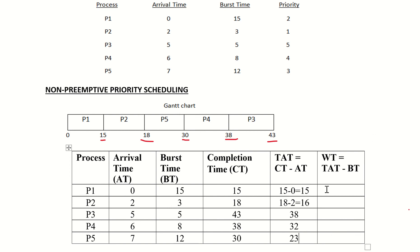Now waiting time equals turnaround time minus burst time. P1 turnaround time is 15, burst time is 15, so 15 minus 15 equals 0. P2 turnaround time is 16, burst time is 3, so 16 minus 3 equals 13. P3 turnaround time is 38, burst time is 5, so 38 minus 5 equals 33. P4 turnaround time is 32, burst time is 8, so 32 minus 8 equals 24. P5 turnaround time is 23, burst time is 12, so 23 minus 12 equals 11.